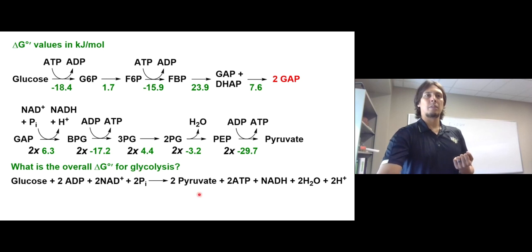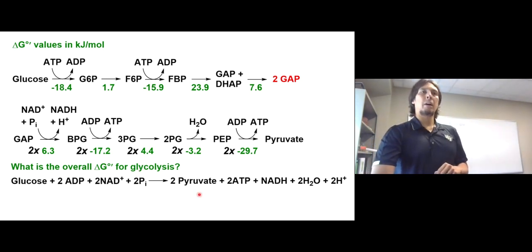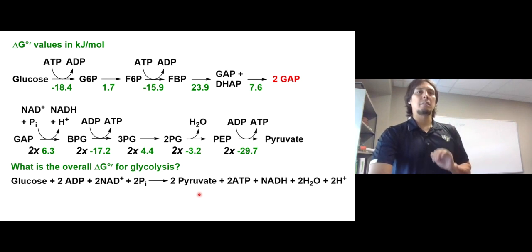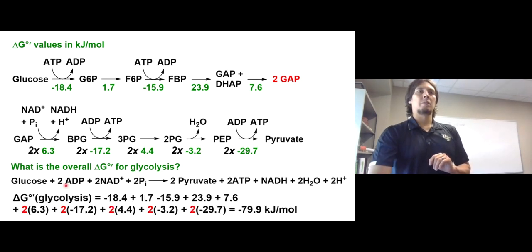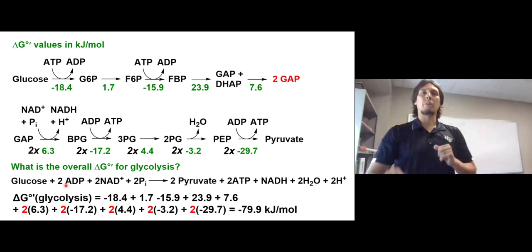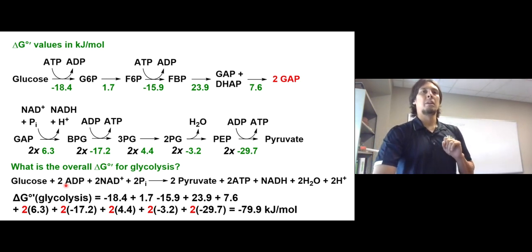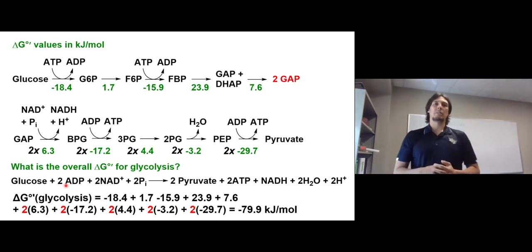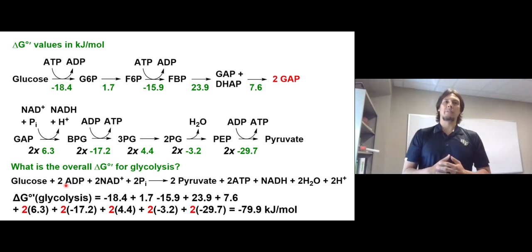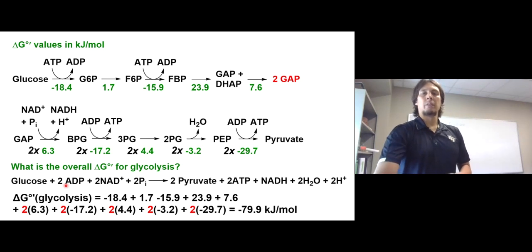We must remember that the steps in the bottom row happen twice because there are two molecules of GAP, so we multiply each of those free energy changes by two. Delta G overall for glycolysis equals negative 18.4 plus 1.7 minus 15.9 plus 23.9 plus 7.6 for the upper row, plus 2 times (6.3 minus 17.2 plus 4.4 minus 3.2 minus 29.7) for an overall free energy change of negative 79.9 kilojoules per mole under standard biological conditions.